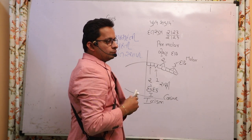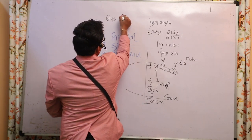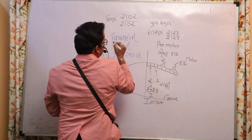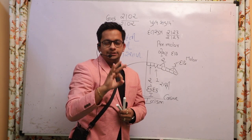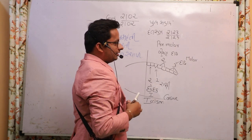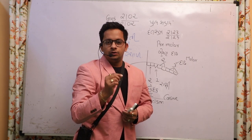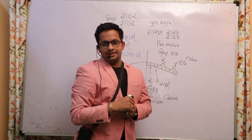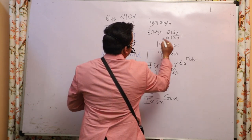The adult human dental formula is 2-1-2-3 on each side. Now if we look at the child's dental formula, in many reference books the child's dental formula is given differently. The child's dental formula is exactly 2-1-0-2 type. In a young child there are 2 incisors, 1 canine, 0 premolars, and 2 molars.